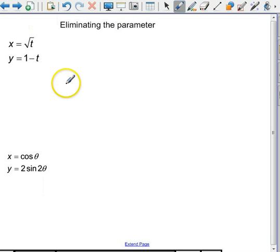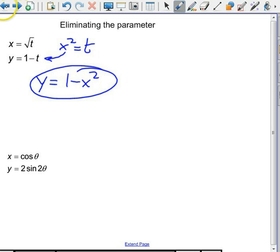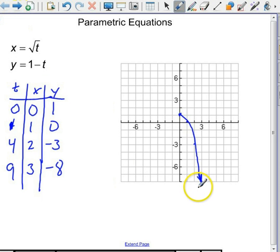Well, how about if I'd like to know what this thing looked like without t in there? It's pretty easy to do. I'm going to solve for t by squaring both sides and plugging that in for t right there. So y equals 1 minus x squared. And you can see that's a parabola, and our graph looks pretty much like a parabola.